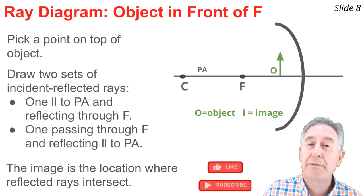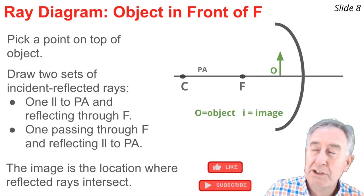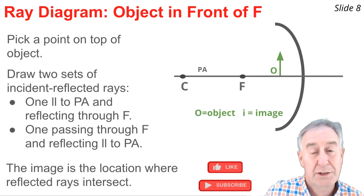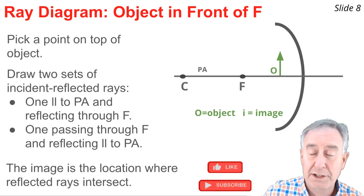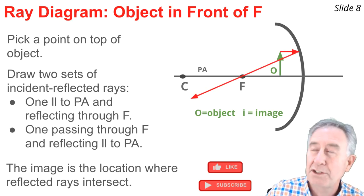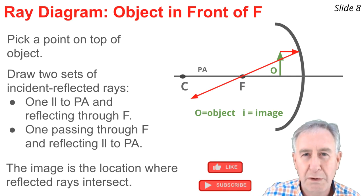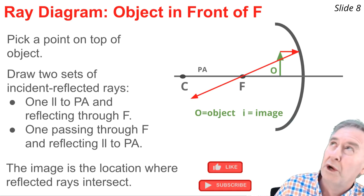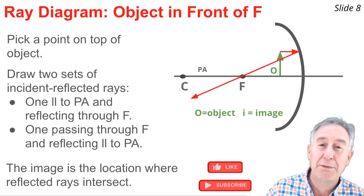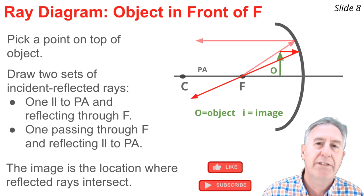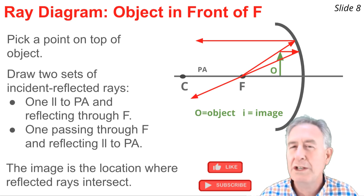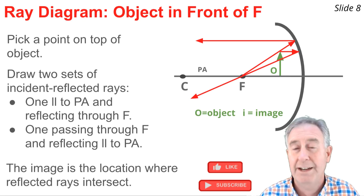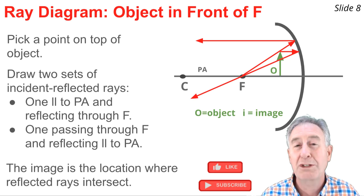In my fourth example, the object is in front of the focal point — less than one focal length from the surface of the mirror. I'm going to do this the same way, but there's a little twist. Pay attention. Pick a point on top of the object, then draw two sets of incident and reflected rays. The first set goes parallel to the principal axis and reflects through the focal point. For the second ray, if you start at the top of the object and draw through the focal point, it would never reach the mirror. So you draw the ray the opposite way — start at the focal point, head to the top of the object and to the mirror, then reflect parallel to the principal axis. Now the two reflected rays don't intersect — they're diverging, not converging. This tells me that the image is a virtual image located behind the mirror.